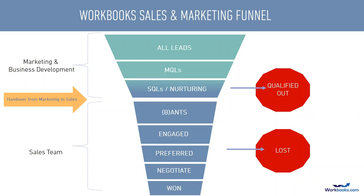To illustrate that, here's the sales and marketing funnel we use at Workbooks. At the top of the funnel we generate leads, and the first stage is marketing qualified leads — leads that are the right shape for our organization. That's how we measure the marketing organization. Marketing qualified leads then progress to sales qualified leads, which the sales team actively progress and attempt to qualify. That early stage — the MQL to SQL process — is managed by our business development teams.